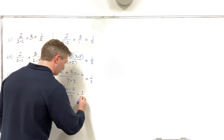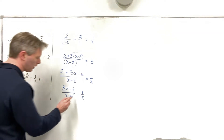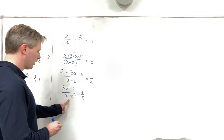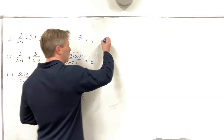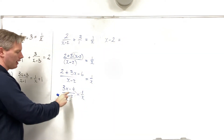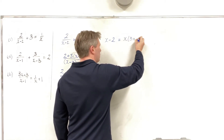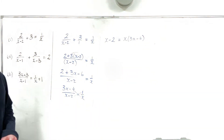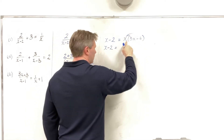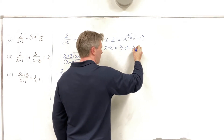Combining the numerator, 2 minus 6 is minus 4, so I have 3x minus 4, all over x minus 2, equal to 1 over x. Now I'm going to cross multiply. That gives me 1 times x minus 2 — which is simply x minus 2 — equal to x times 3x minus 4. Distributing the x, I get x minus 2 equals 3x squared minus 4x.